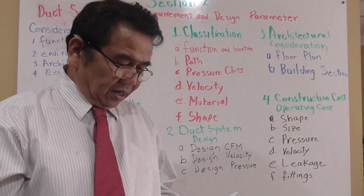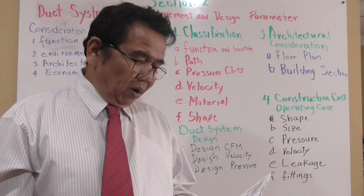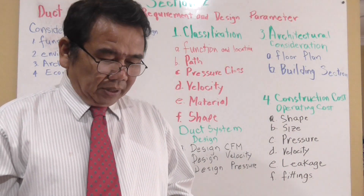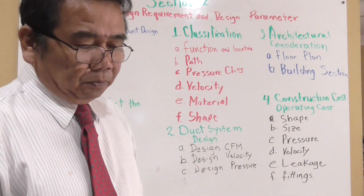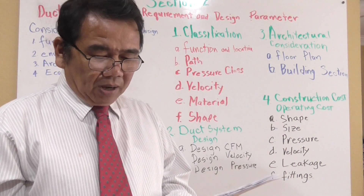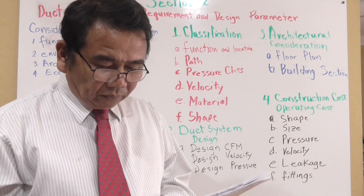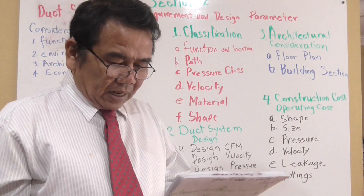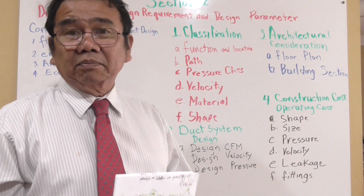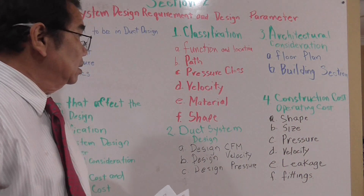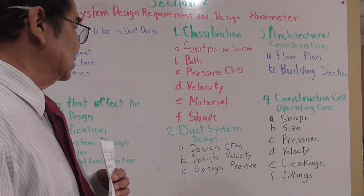The shape is dictated by special requirements, operating consideration, noise consideration, and economics. Round, oval, and square ducts are options, but rectangular duct is recommended because you can save more space.